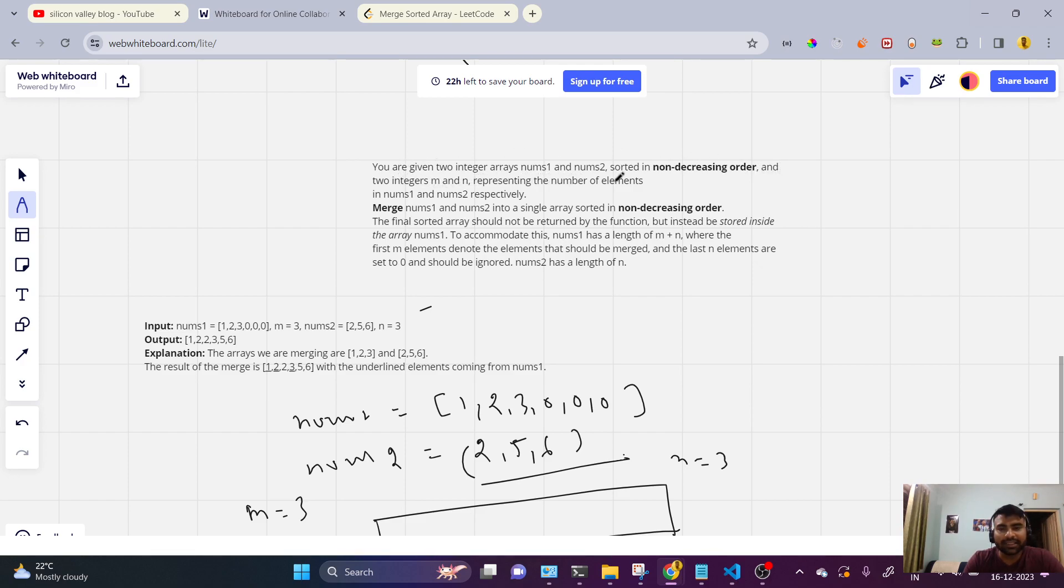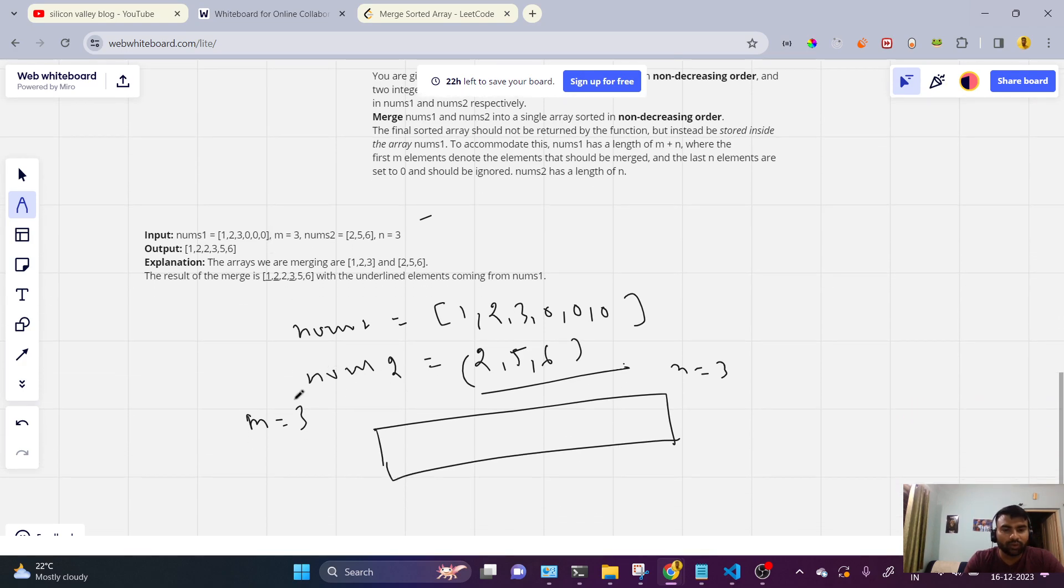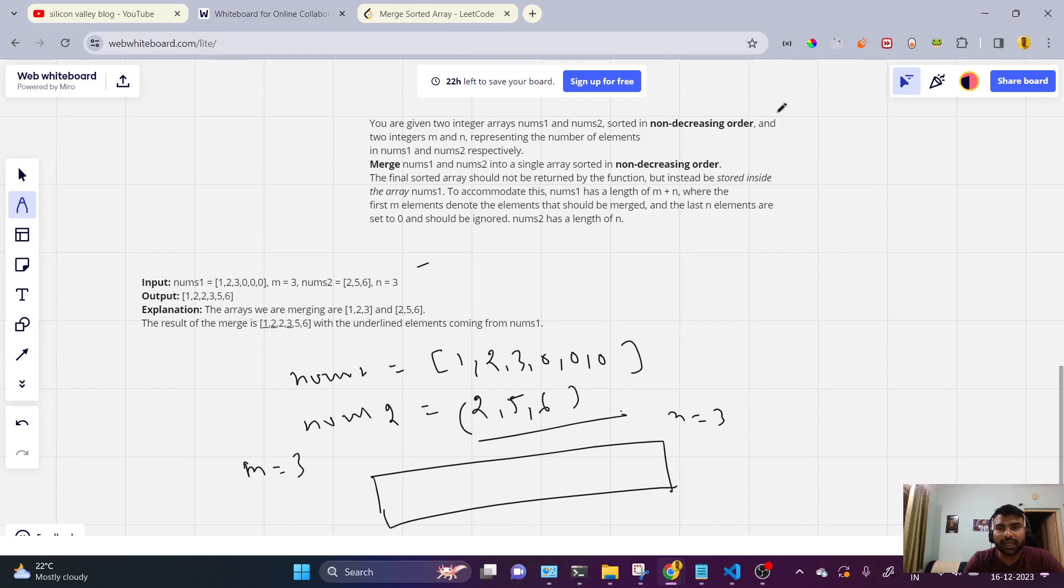The m and n are representing number of elements. m is representing elements of nums1. So what is the space? How many elements we are having in nums1? 1, 2, 3. And n is representing elements in nums2. So n represents how many elements we need in the sorted array.